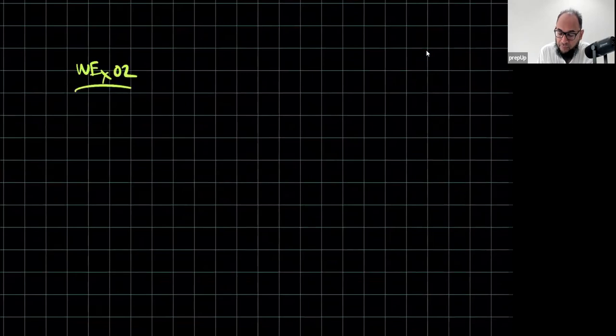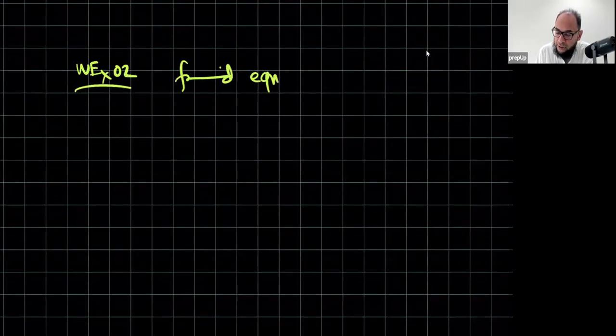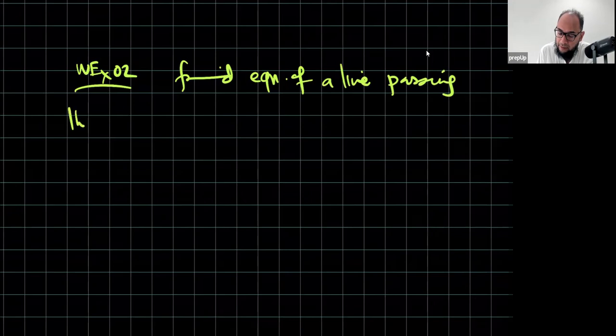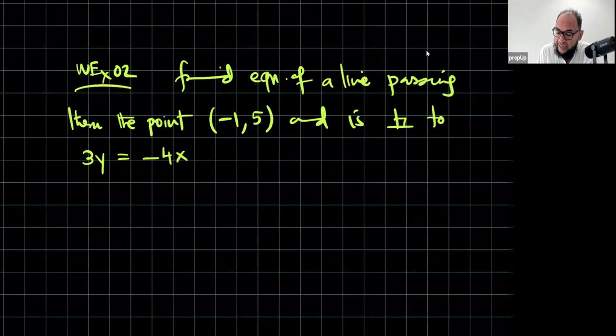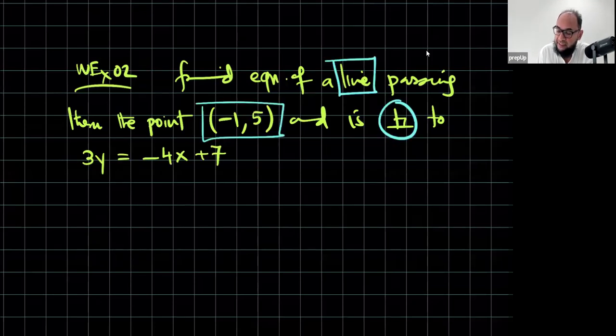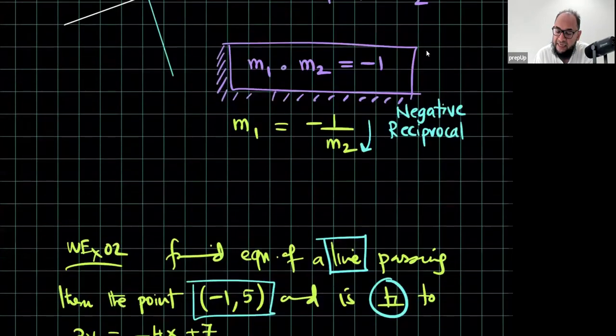Let's create a question. Worked example 2. Find equation of a line passing through the point, let's say (-1,5) and is perpendicular to 3y = -4x + 7. That is the working that needs to be done. We are looking for the equation of a line. This is the point through which it's passing. It's perpendicular to this line. So, now you know what is step number 1.